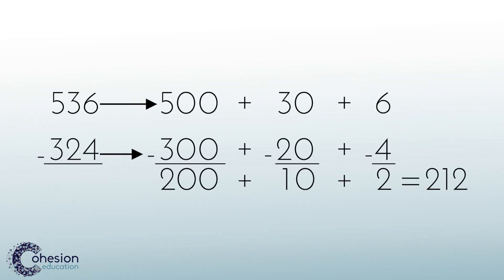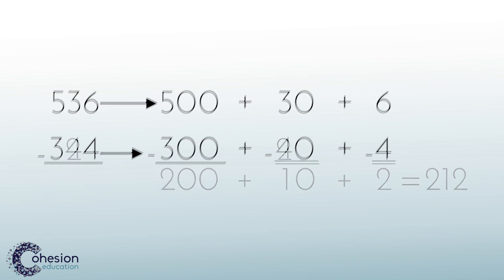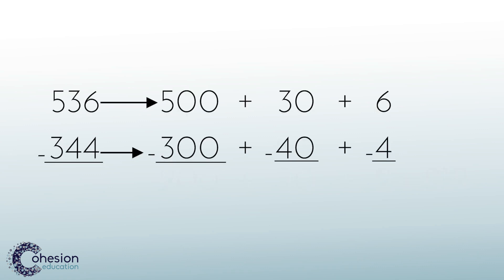Students can sometimes have difficulty with regrouping within this strategy. For example, suppose our original question was changed to 536 minus 344. In the tens place, 4 is greater than 3, so we must regroup one of our hundreds. We take one of our hundreds, leaving us with 400, and regroup it to 10 tens, which would now give us a value of 130 in the tens place. Now, we can subtract 130 by 40 to get 90.